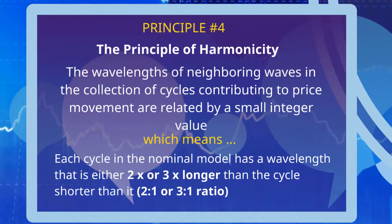We met the collection of cycles in our previous video about the principle of nominality in which I presented the nominal model. And a neighboring wave is simply a cycle which is one degree longer or one degree shorter in that nominal model.